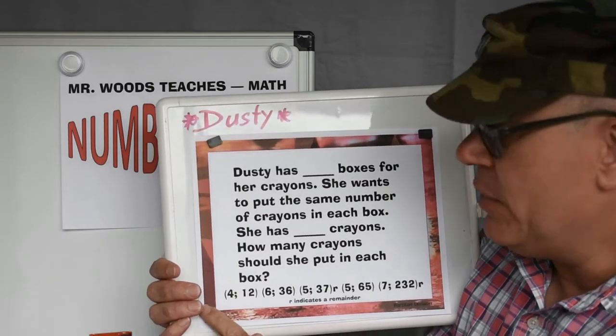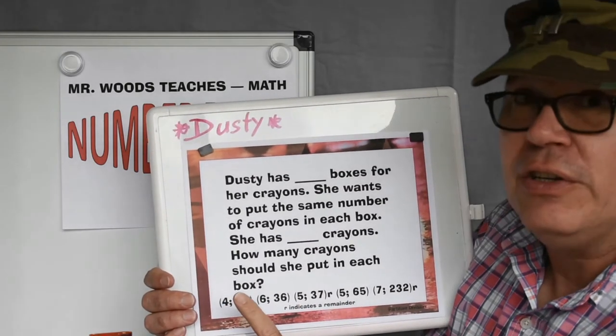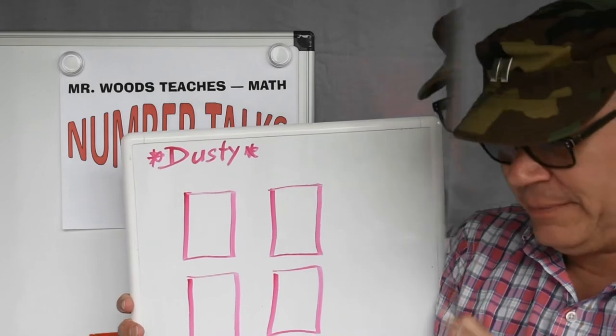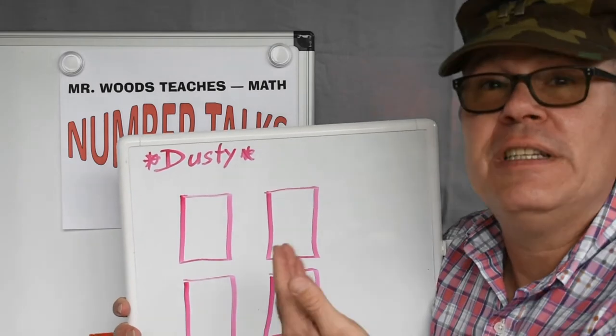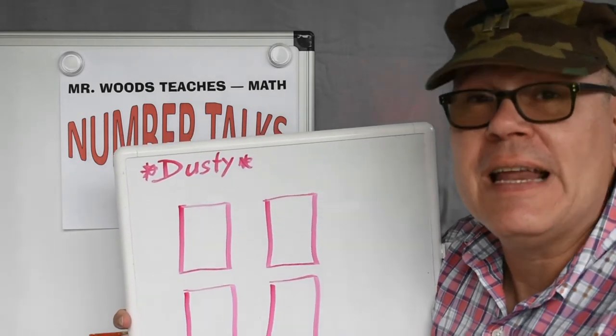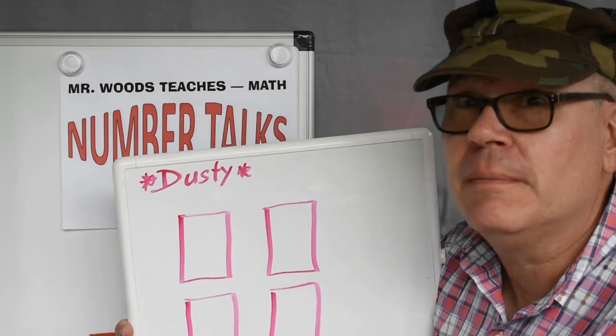Remember, I'm using these numbers down here. You can use your own as well. So I drew Dusty's four boxes. Now, how many crayons should go in each if she has 12?